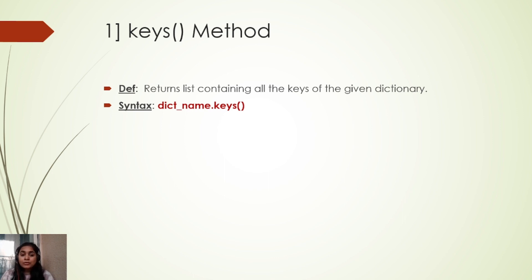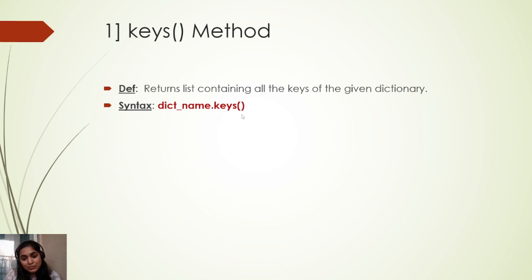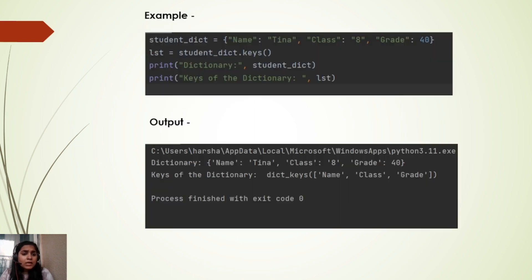So what will happen when we use the keys method? Let's say we have a dictionary and we want to get a list of all the keys present in that dictionary. To do that we will be using the keys method. The syntax is: dictionary_name.keys(). This will output the list of all the keys present in the dictionary.